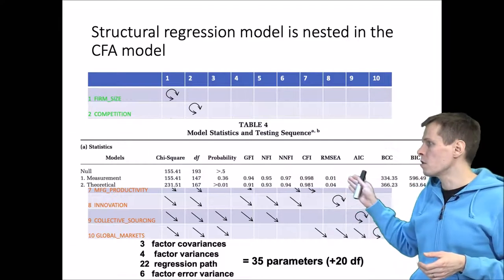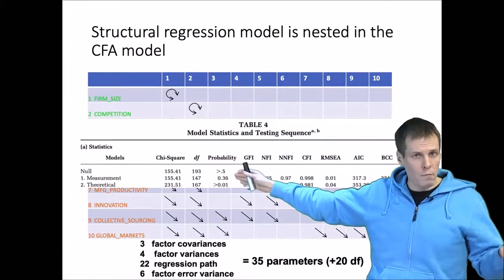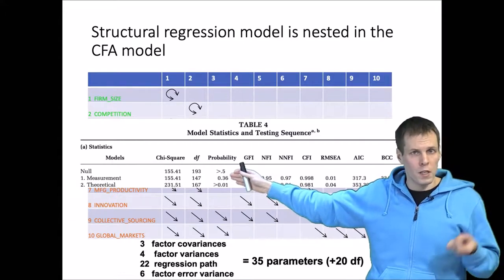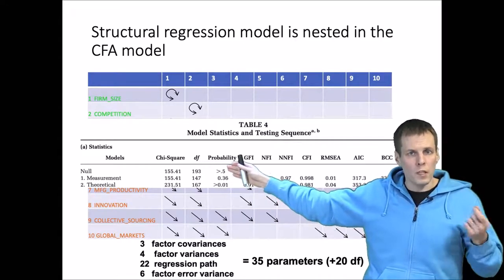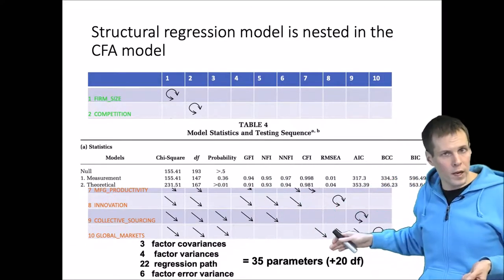That is shown in the paper. They have this table and the degrees of freedom for the measurement model including the factor loadings and indicator errors is 147, and the theoretical model 167, which is plus 20 more.